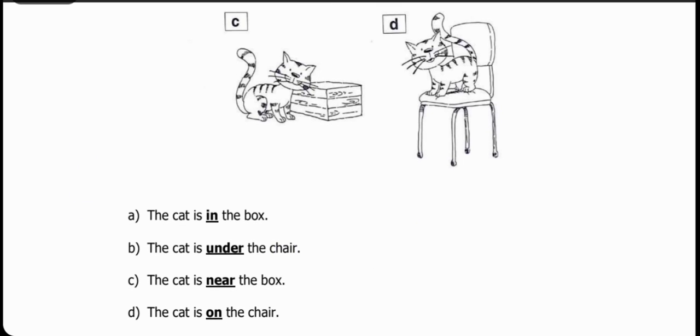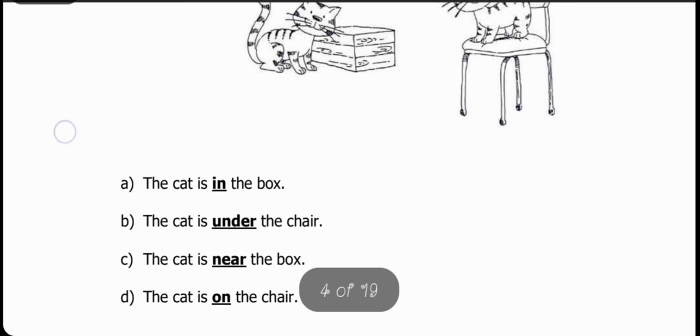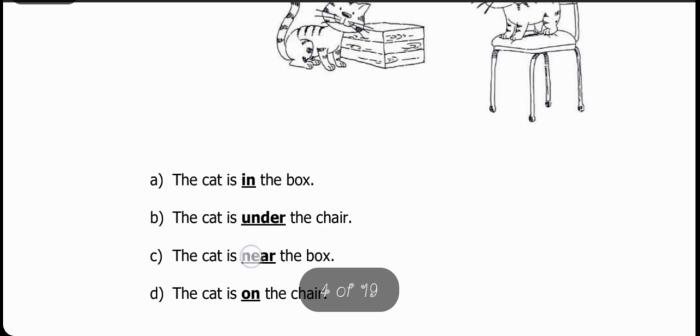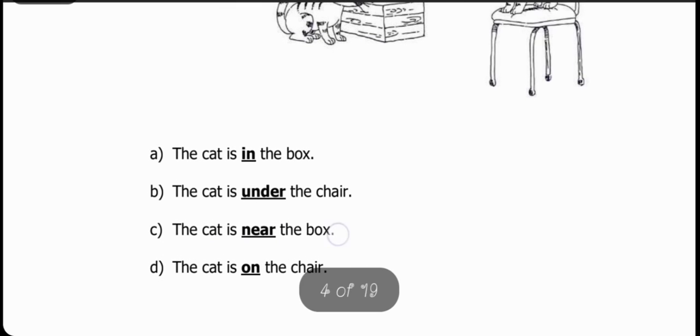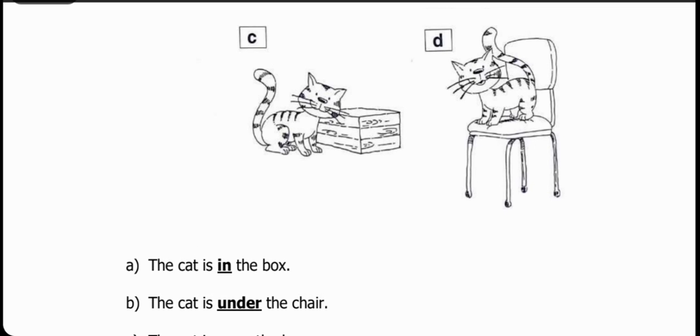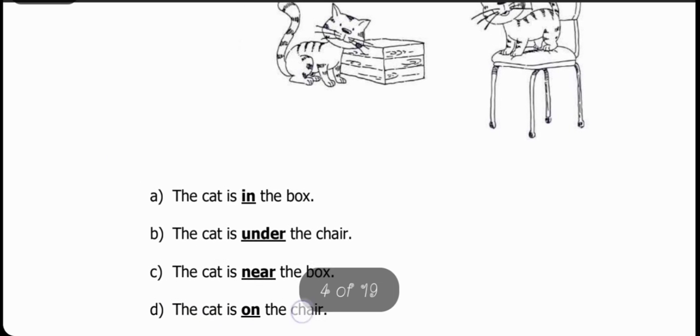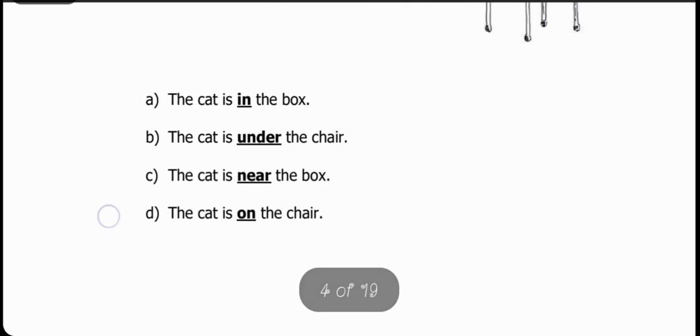Next picture: There is a box and the cat is sitting near that box. The cat is near the box. The word used for paas (near) is 'near'. Last picture: There is a chair and the cat is sitting on top of the chair. The cat is blank the chair. What will be used for upar? On. The cat is on the chair.